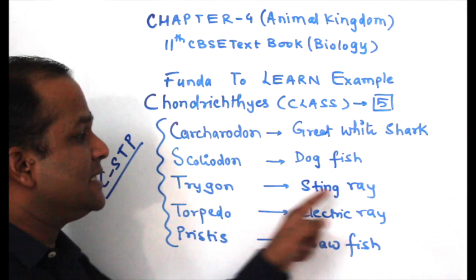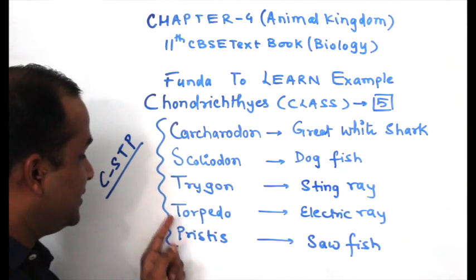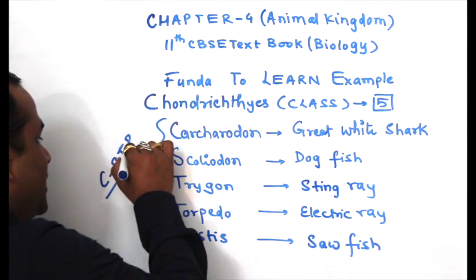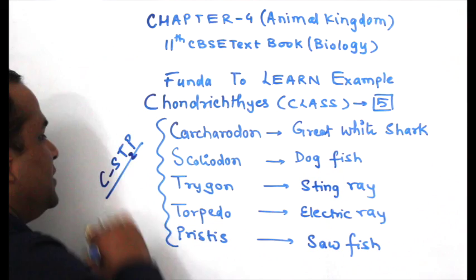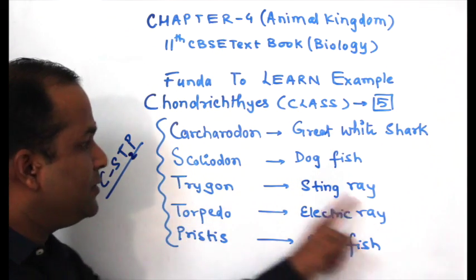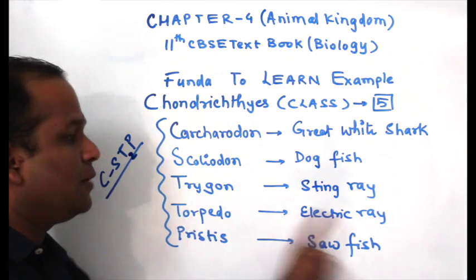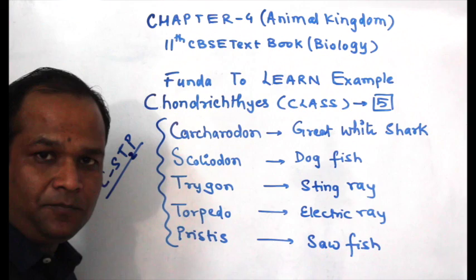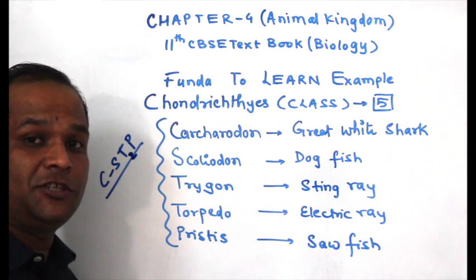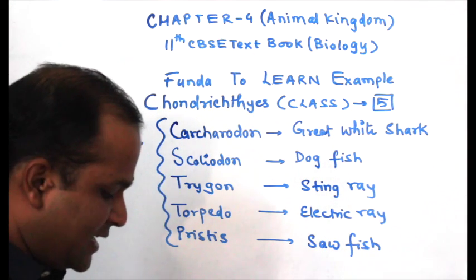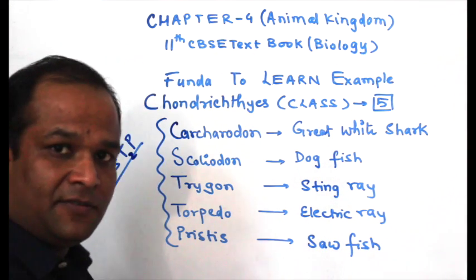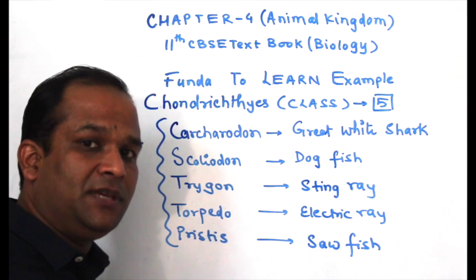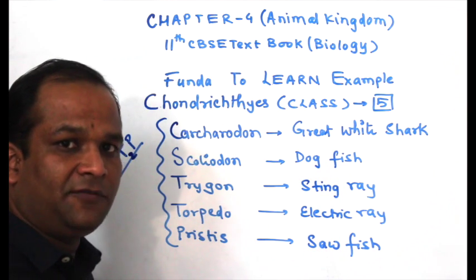T stands for Trygon, which is stingray. The next T stands for Torpedo, which is electric ray. And P stands for Pristis, which is sawfish. So in total, five examples are given using the mnemonic CSTP.